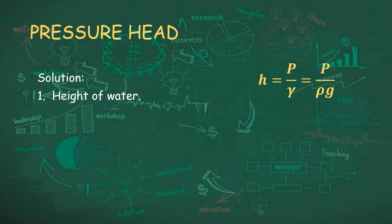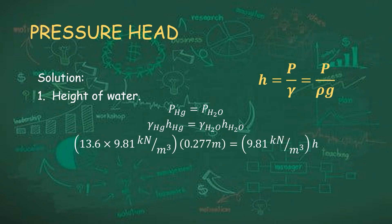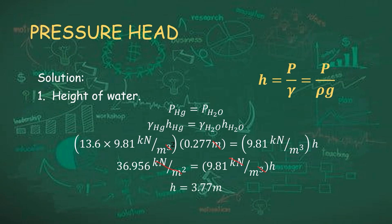First, we are going to determine the equivalent height of water. Based on the equation, we can manipulate it: unit weight of mercury multiplied by height of mercury equals specific weight of water multiplied by its height, which is the unknown. Plugging in values: 13.6 (specific gravity of mercury) times 9.81 kN/m³ times 0.277 m equals 9.81 kN/m³ times the water's height. This gives 36.956 kN/m² equals 9.81 kN/m³ times head. Simplifying, the height of water is 3.77 meters. Don't forget to cancel out the units to avoid confusion.